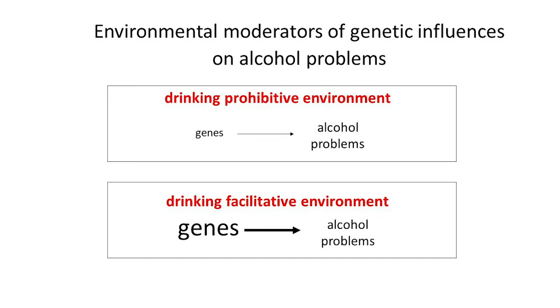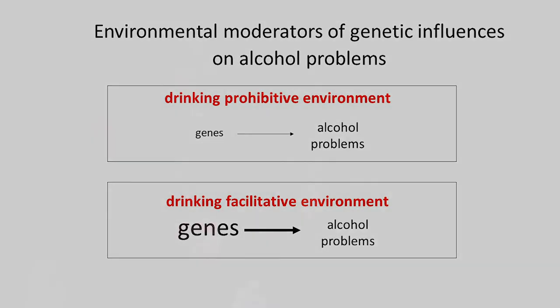Think about environmental moderation of genetic influences on alcohol problems. You could think about drinking-prohibitive environments where the genes for alcohol problems may be relatively muted — think maybe Indonesia. Or you could think of a drinking-facilitative environment, like Australia, where the genetic risk factors for alcohol problems might be more amplified. The idea is that things might differ depending on where you happen to live.